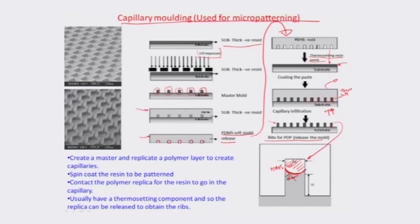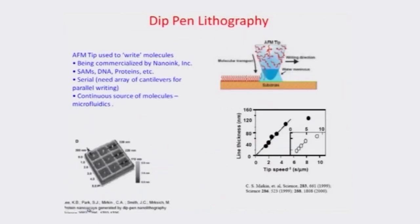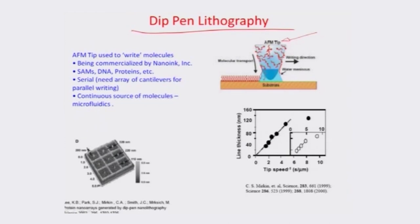This is capillary molding used for micropatterning of substances — one very interesting soft lithography example. Another very important and essential technique used nowadays is dip pen lithography, which is also a process for writing molecules.